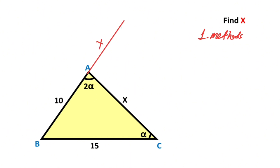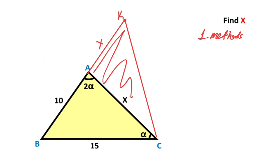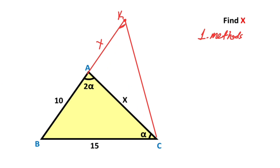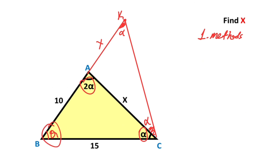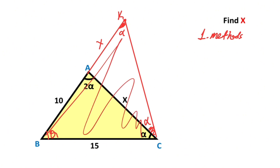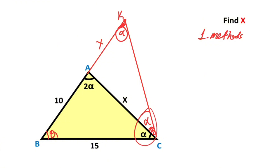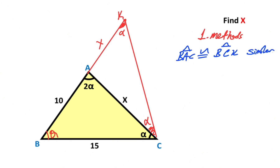If you extend corner A by X units, then let's connect these two corners and call here point K. If you notice, this triangle is an isosceles triangle, so these angles must be equal to alpha. Then if you focus on this triangle, let's call here theta. The angles of the yellow triangle are alpha, 2-alpha, and theta. Likewise, the angles of the biggest triangle are also alpha, 2-alpha, and theta. That means triangle BAC and triangle BCK are similar.